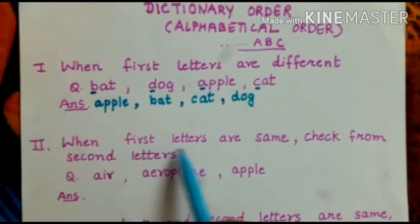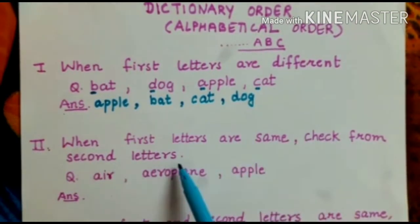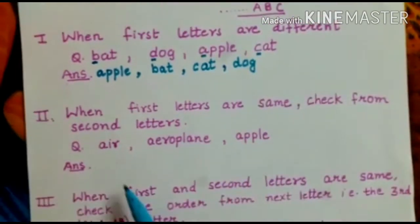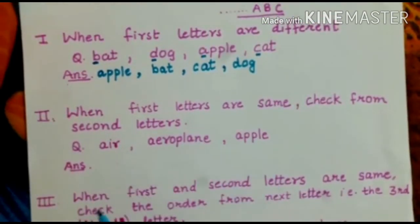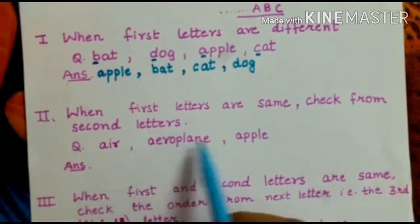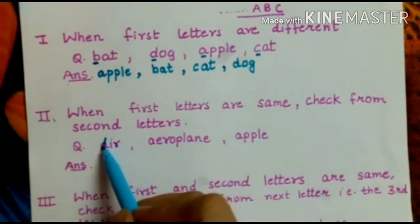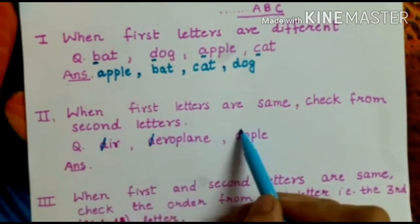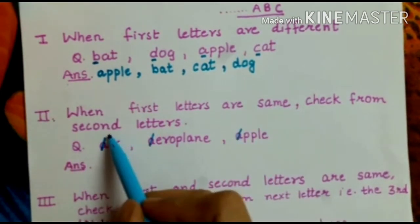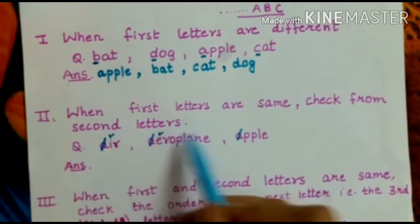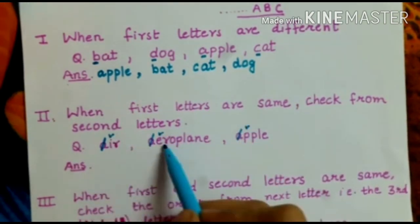Let us see the second case: when first letters are the same, we have to check from the second letters. See this example — air, aeroplane, apple. The first letters are all the same, so just cancel them and check from the next letter, that is the second letter. In these words the second letters are I, E, and P.